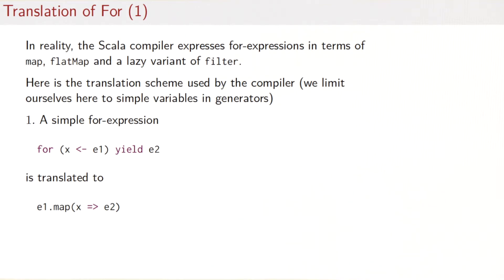So let's look first at a simple for expression that consists of just one generator. For x taken from e1 yield e2 for arbitrary expressions e1 and e2. So that would be translated by the Scala compiler to an application of map, namely e1 map the function that takes an x and returns e2. The two are the same thing.